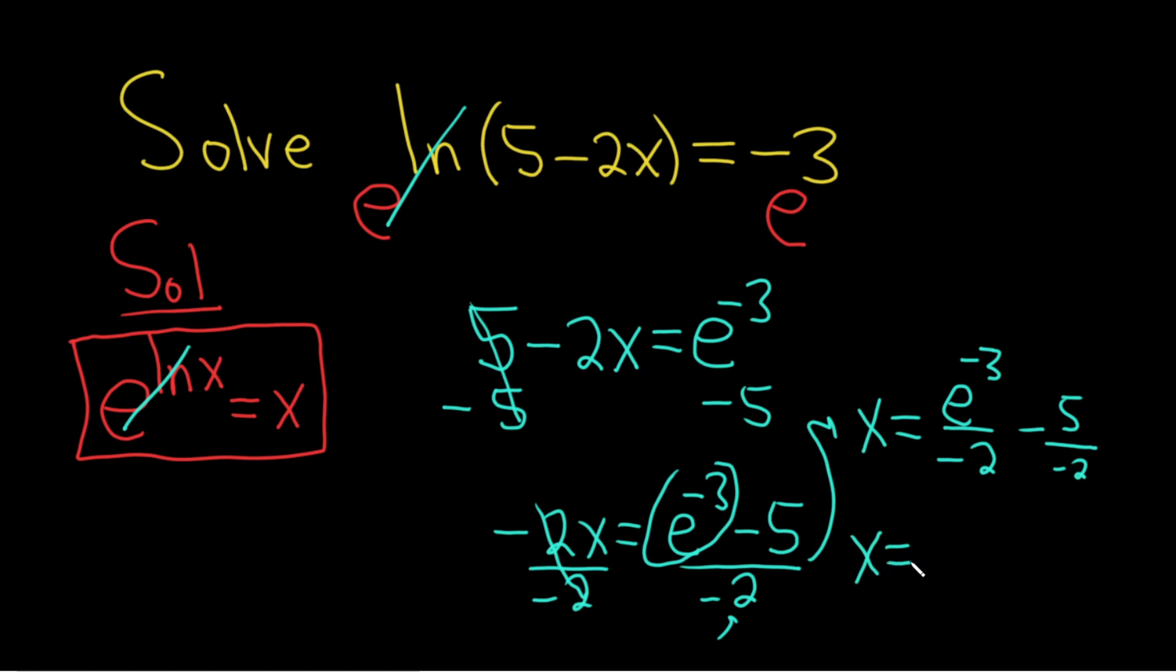So x equals... we can write it like this: negative 1 half e to the negative 3, right? That's the same thing, because the e is really over 1. And then this becomes a plus, plus 5 halves. Just like that. And this would be the solution to this equation.